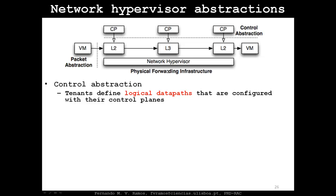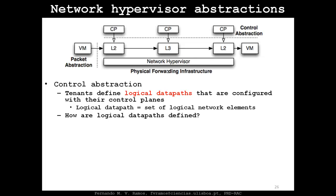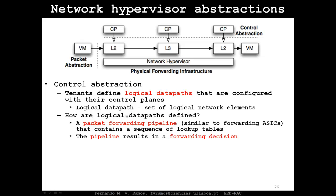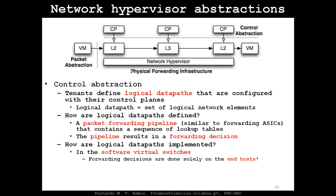This logical data path — also called a logical network — is just a set of logical network elements. They are defined as a pipeline of match-action tables, which is how all networking boxes work. The pipeline results in a forwarding decision. These logical data paths are implemented in software, specifically in the virtual switches running in the hypervisor of a server.